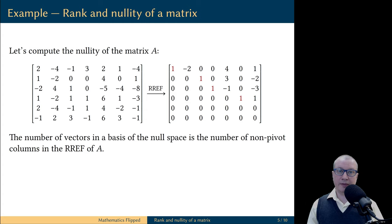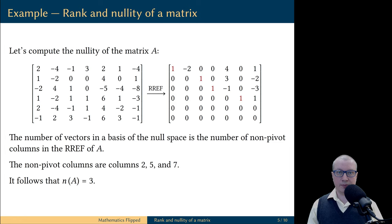But the number of free variables is equal to the number of non-pivot columns in the reduced row echelon form of the coefficient matrix. There are three non-pivot columns in this reduced matrix. These are columns 2, 5, and 7.